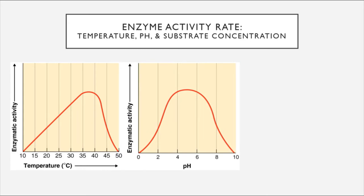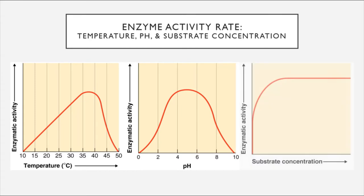Just like enzymes prefer a specific temperature, each enzyme also has a preferred pH value—a level of acidity versus alkalinity at which it works best. This enzyme experiences a peak somewhere in the range of pH 5, which is slightly acidic. In the human body, you would find pH 5 on the surface of the skin, with even lower pHs in the stomach and higher pHs in saliva or blood. So we could deduce this might be an enzyme found on the surface of the skin based on its preferred pH.